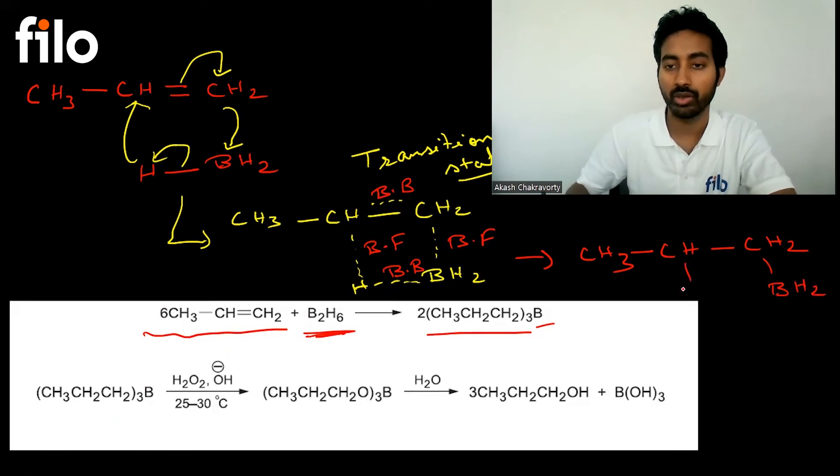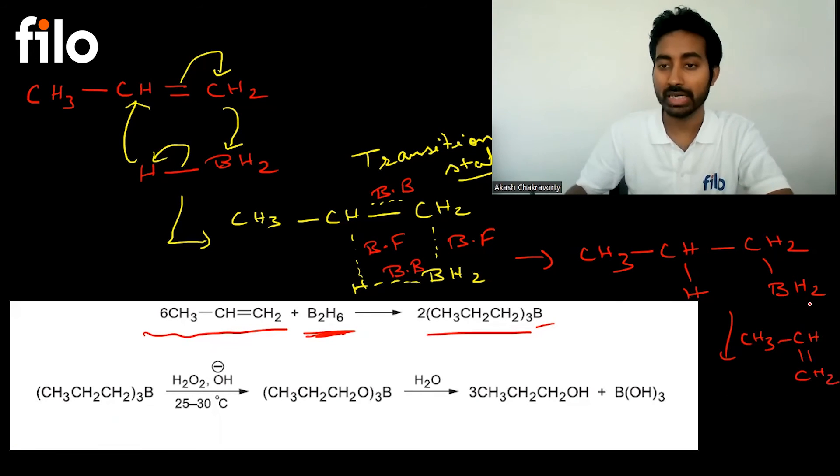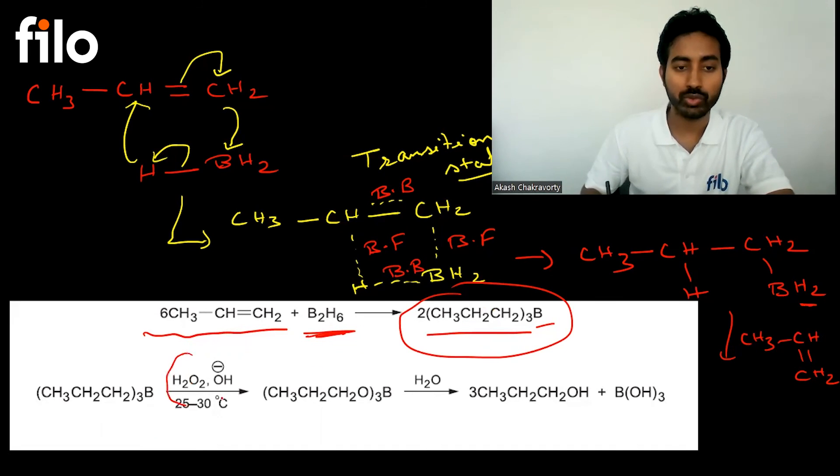CH3-CH double bond CH2 reacts, and finally when we have three hydrogens replaced, we get trialkyl boron. Then H2O2 in basic medium is added.